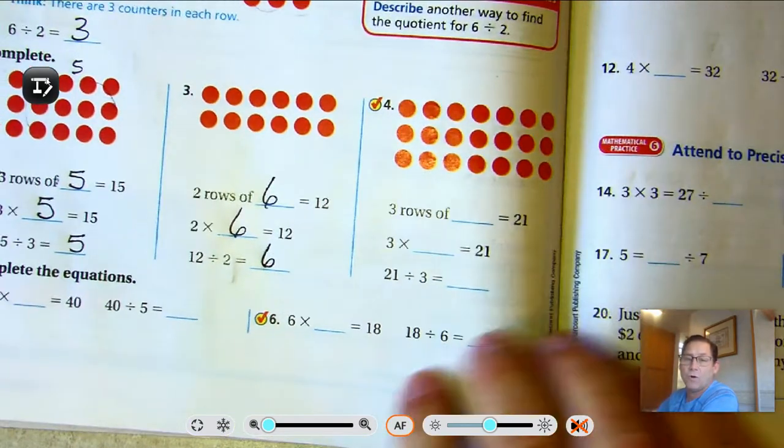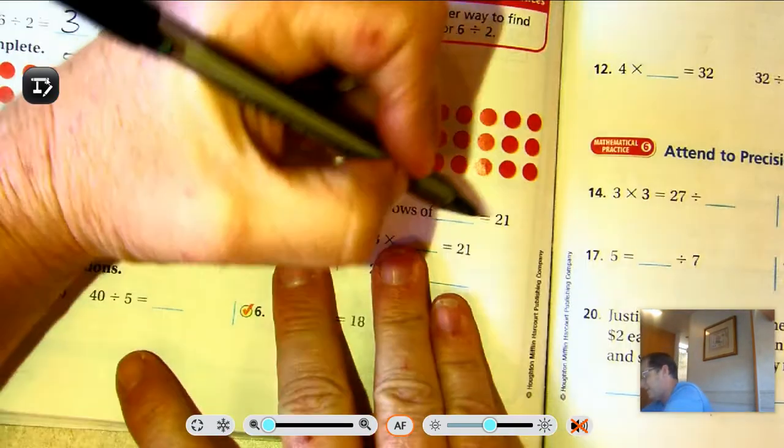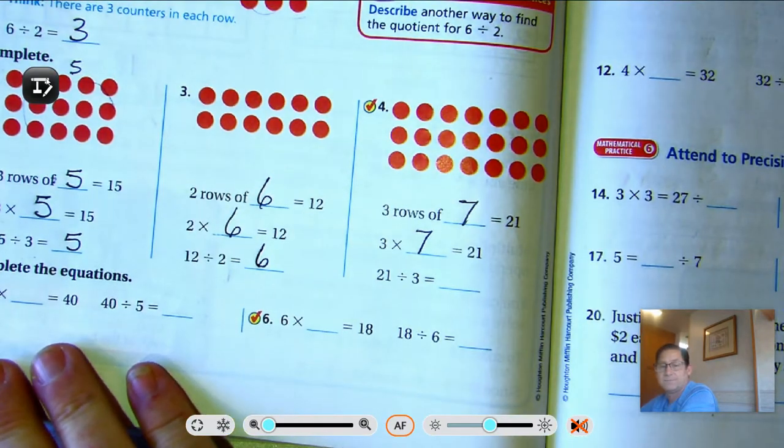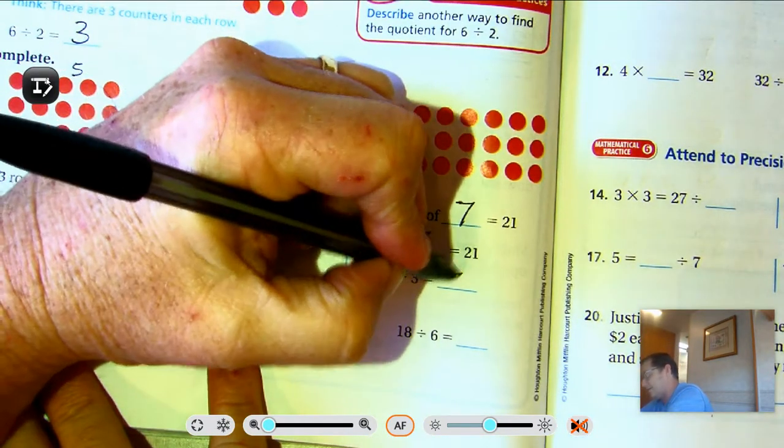Three rows of what is 21? Seven. So three times seven is 21. So 21 divided by three is seven.